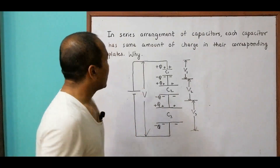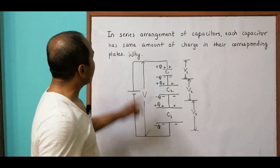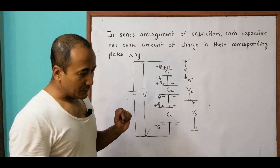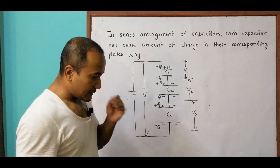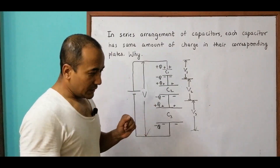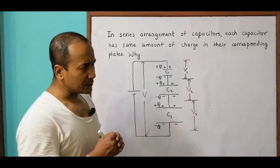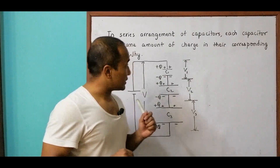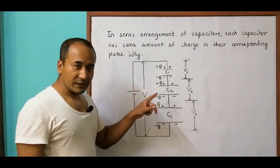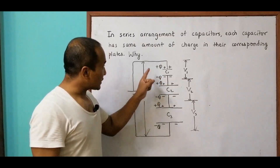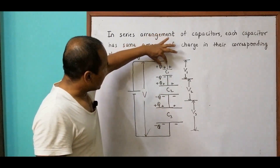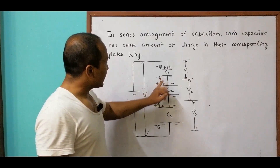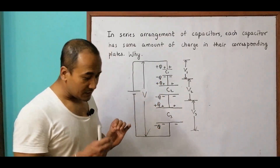The question says: in a series arrangement of capacitors, each capacitor has the same amount of charge. Why? In parallel, the charge from the source divides into several branches and gets deposited in each plate according to their capacitances — the potential difference (PD) is the same. But in series, the PDs are different, the capacitances are different, yet the charges deposited will be the same — equal positive charges on the upper plates and equal negative charges on the lower plates of all capacitors.